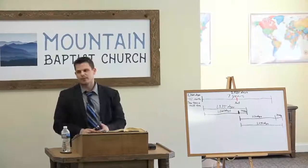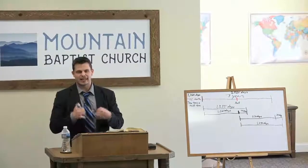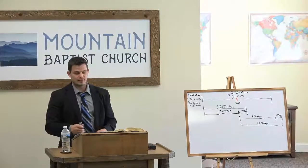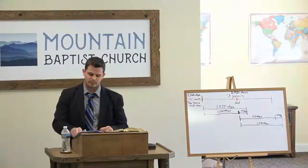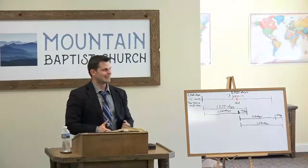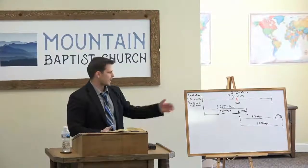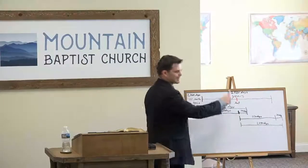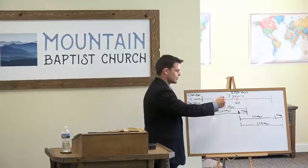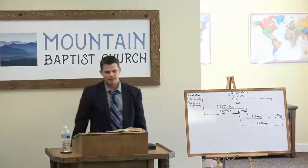The abomination of desolation is kind of like your central marker — you're always measuring either going toward it or coming from it. Go to Revelation chapter 12. I want to show you where that first 1260 is mentioned and how all these numbers in Daniel and Revelation are really talking about the same time periods, just using different terminology.